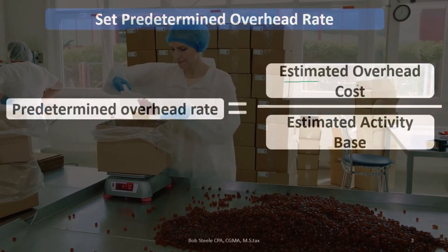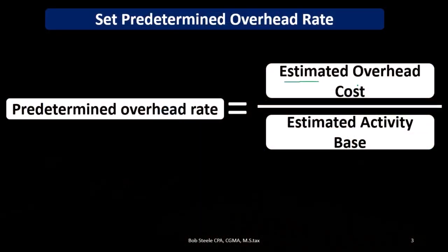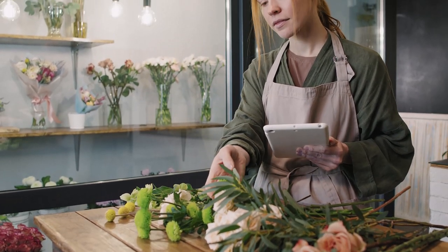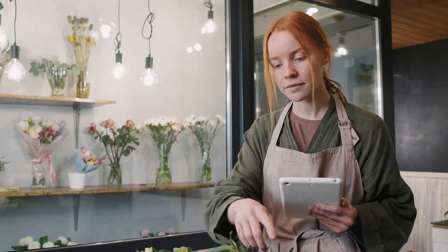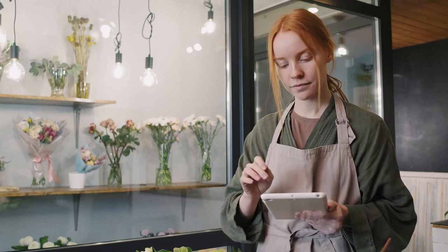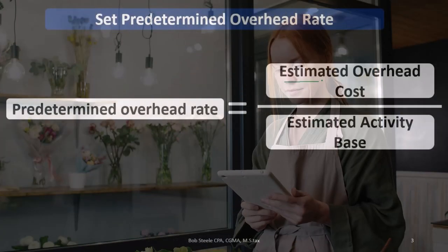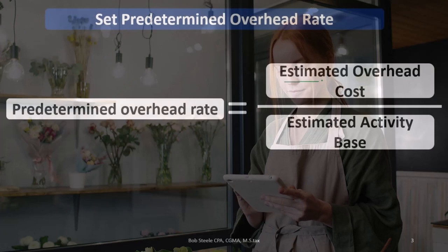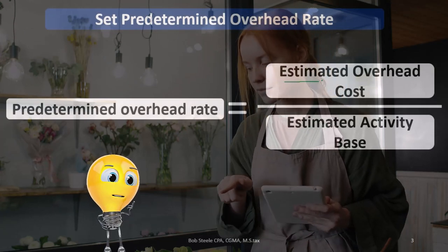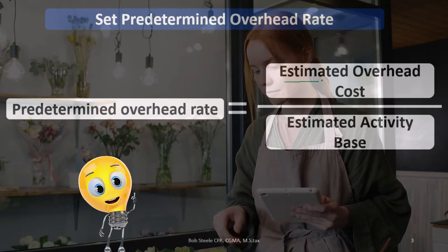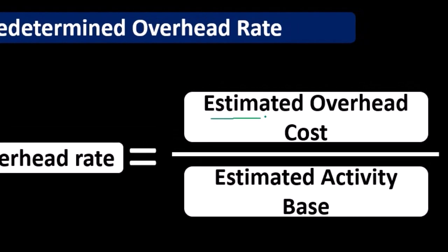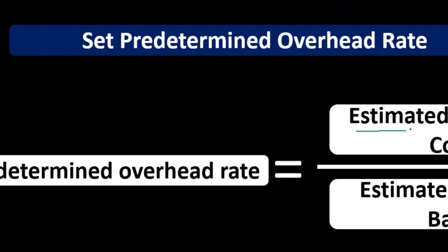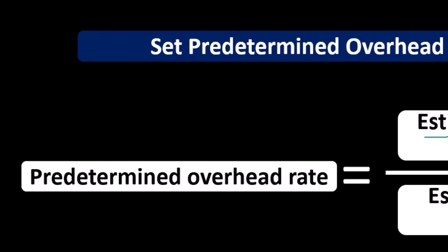We have to start tracking costs as we go, so we need an estimate. Basically, we're asking: what do we think total overhead will be at the end of the month? Usually we'll start with last month's figures and then project whether we expect an increase or decrease based on future events. Any estimate is going to start with past data and then consider what will change going forward.